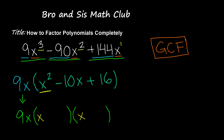We're left with negative 10x and positive 16. As in the previous video on factoring polynomials, we need to find factor pairs of 16 that when multiplied give you 16, but when added give you a sum of negative 10. Since we have a positive product and a negative sum, the two factor pairs will either be both negative, or one positive and one negative.